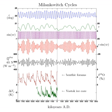However, the Earth's eccentricity is always so small that the variation in solar irradiation is a minor factor in seasonal climate variation, compared to axial tilt and even compared to the relative ease of heating the larger land masses of the Northern Hemisphere.